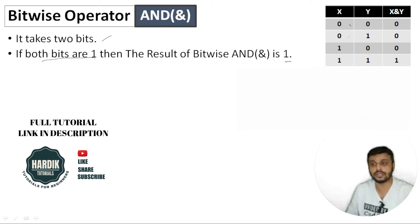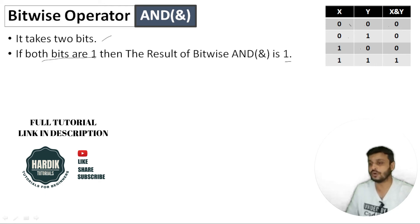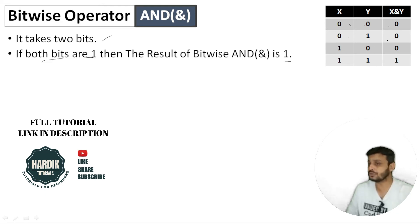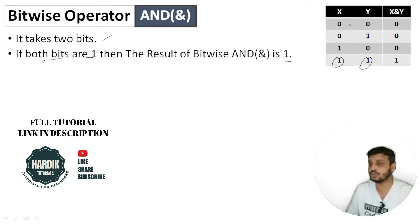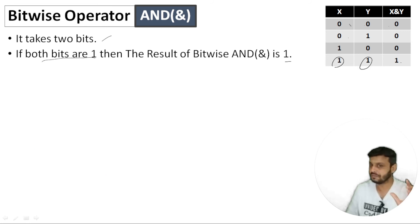If x is 0, then we will get 0. If we have 0, then we will get 0. If we have 2 beats, then we will get 2 beats, and then we will get 0.